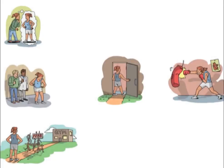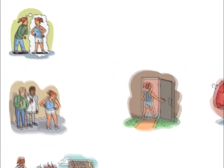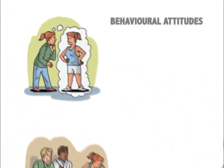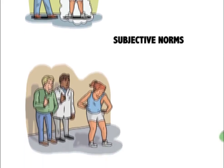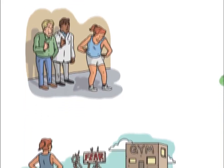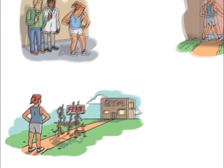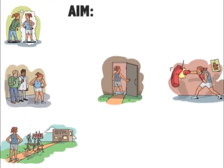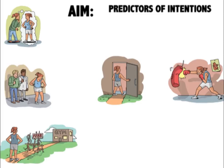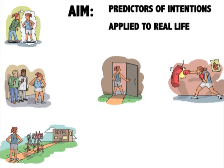According to the theory of planned behaviour, intentions are the product of three different processes: behavioural attitudes, subjective norms, and perceived behavioural control. By the end of the presentation, you will hopefully understand the different predictors of intentions according to the theory of planned behaviour. We will also apply a real-life example to the theory, helping you to recognise how this might be used in a day-to-day scenario.